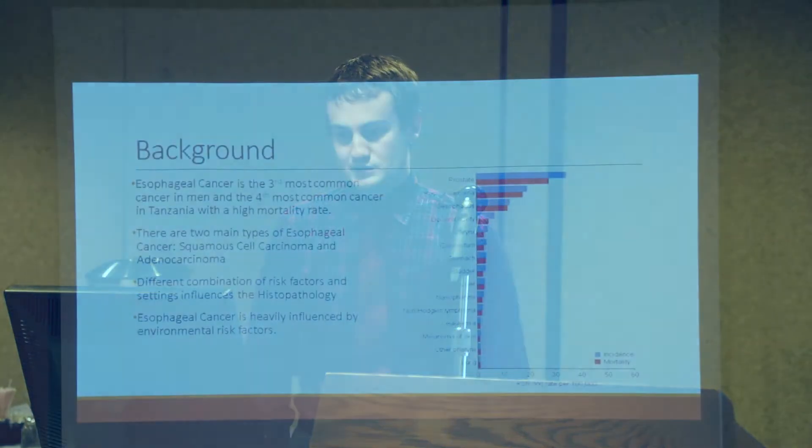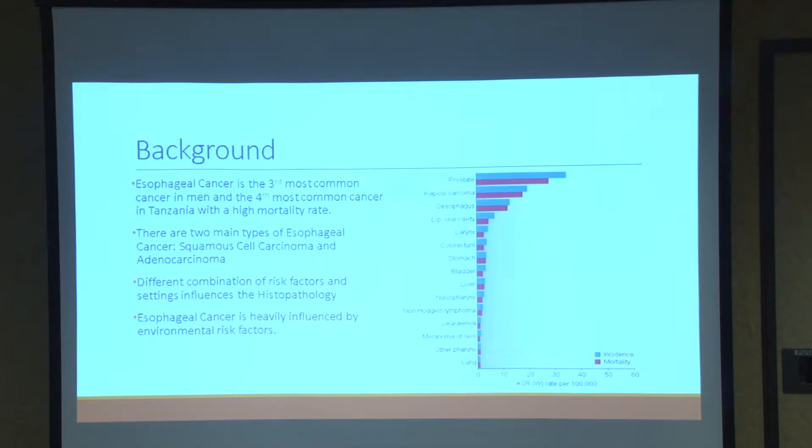There are two main types of esophageal cancer: squamous cell carcinoma and adenocarcinoma. Squamous cell carcinoma has about a 90% prevalence rate in Tanzania compared to adenocarcinoma. Squamous cell carcinoma is generally tied more to smoking and alcohol consumption, whereas adenocarcinoma is generally thought of as more diet-related. Squamous cell carcinoma is in the epithelial cells towards the middle of the esophagus, and adenocarcinoma is in the glandular cells in the lower part.